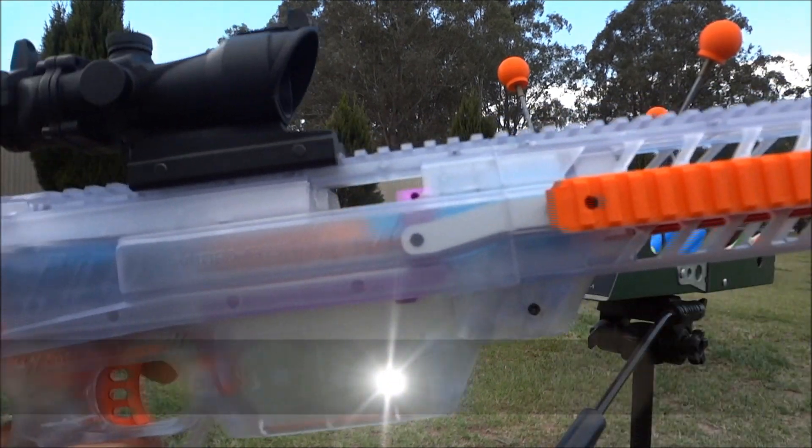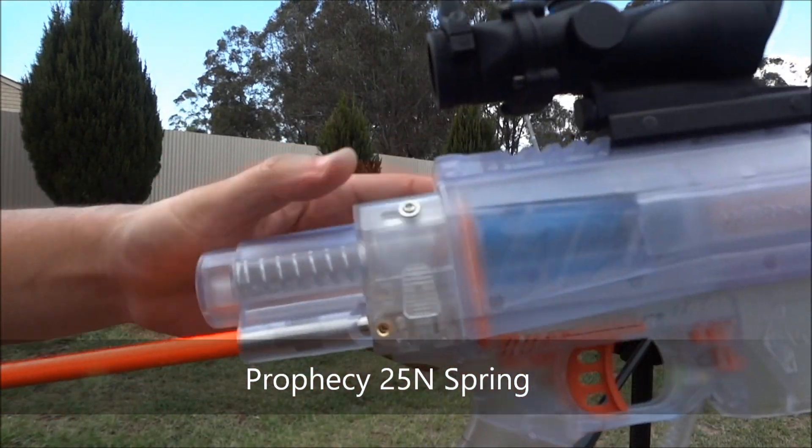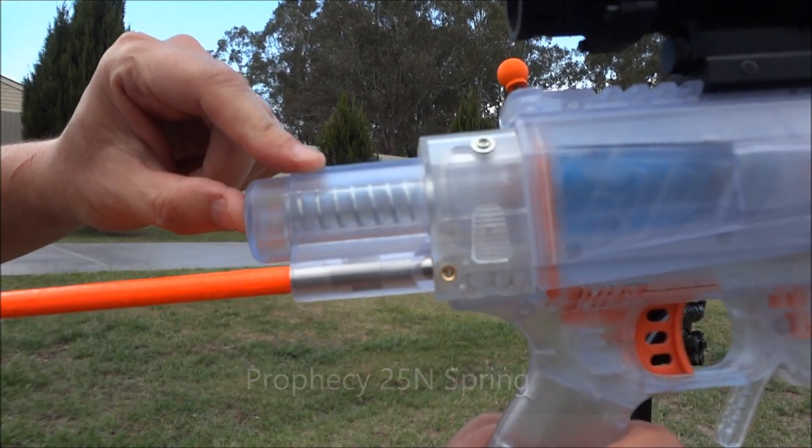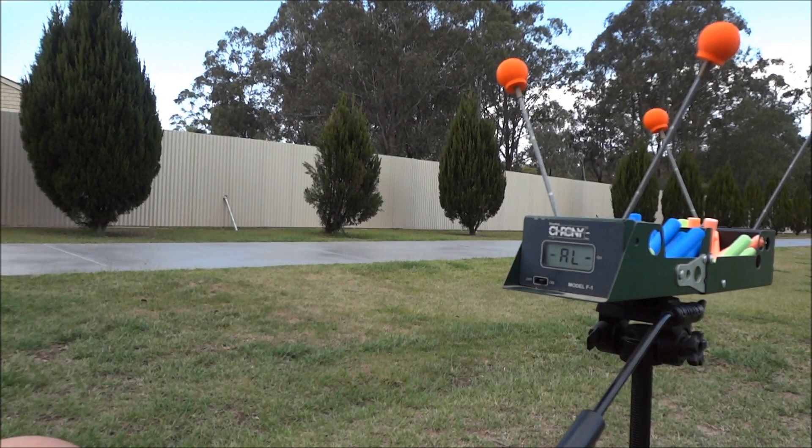All right, so we've got our Prophecy with Power Stefan kit, expanded plunger tube, and the normal 25N spring with ACC Gen 3 darts.